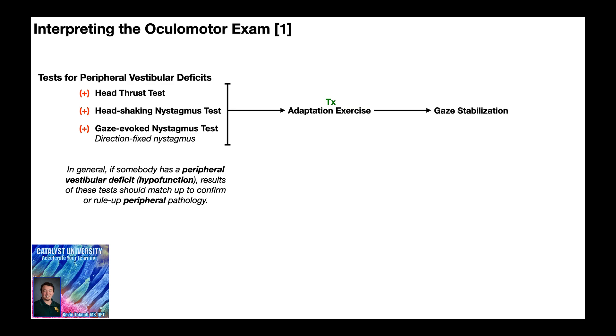When somebody has a hypofunction, there's a mismatch between the vestibular information coming from one ear and the vestibular information coming from the other, and that causes impaired gaze stabilization. So the exercises we give need to target improvements in gaze stabilization, and in general, those are these exercises right here.